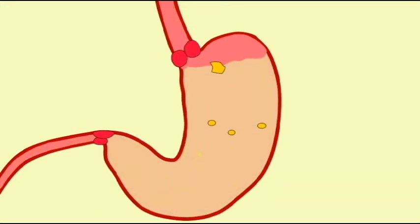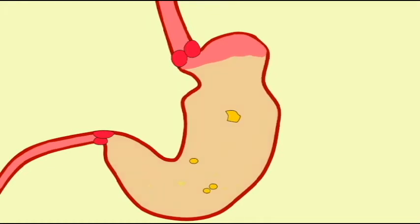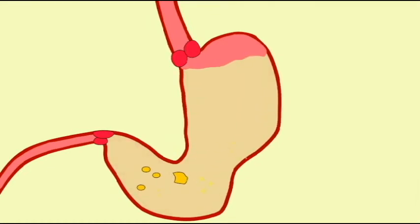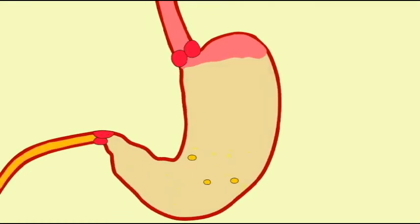As the chyme is pushed towards the pyloric sphincter, the pyloric sphincter may open and allow some of this chyme to enter the small intestine.